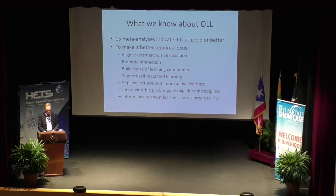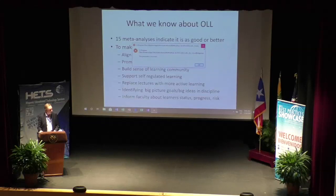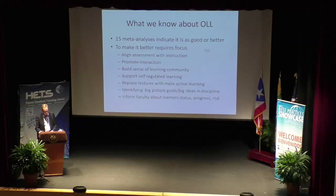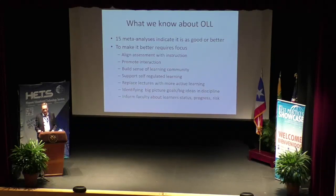What we know about online learning from about 17 meta-analyses is that it can be as good or better than classroom instruction. To make it better requires that we align assessment with instruction, promote interaction, build a sense of learning community, support self-regulated learning, replace lectures with more active learning, identify big picture goals and big ideas in the discipline, and inform faculty about learner status, progress, and risks. So what is the role of AI in all of this? If we're going to work with machines instead of against machines, what role does AI play? I think there is a good role for AI.